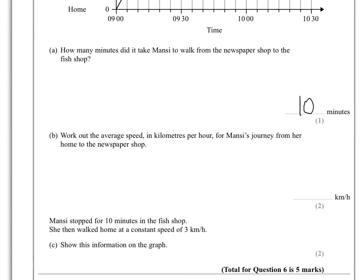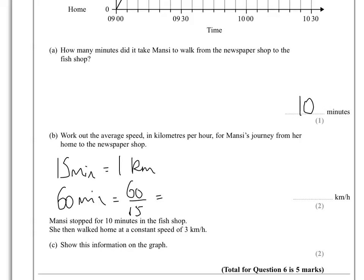We need kilometres per hour. So 15 minutes equals 1 kilometre. Therefore, in 1 hour — which is 60 minutes — she would do 4 times as much, because 60 divided by 15 is 4, times the 1 kilometre. That gives us an average speed of 4 kilometres per hour.